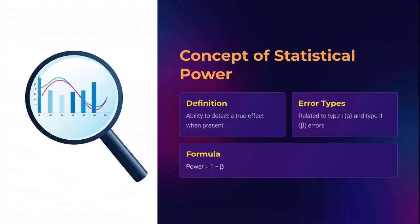Statistical power is the probability that your study will correctly reject the null hypothesis when a true effect exists. Simply put, it's your study's ability to detect the truth. Power is influenced by your sample size, the magnitude of the effect, and the significance level you set. A typical threshold is 80 to 90 percent, which gives you a solid chance of capturing a true relationship if it exists. This is directly tied to type 2 error, or beta — the probability of missing a real effect. The complement, 1 minus beta, is your power. High power reduces the risk of false negatives.